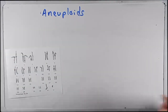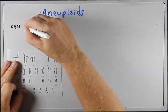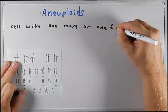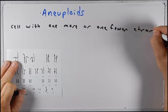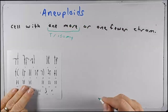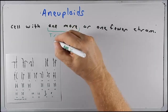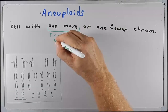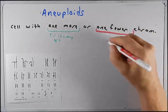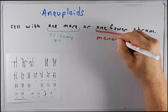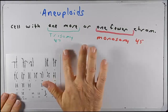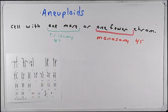Now let's move our attention to aneuploids. An aneuploid is a cell with one more or one fewer chromosome. When it's a cell with one more chromosome we call that a trisomy — in humans, someone who is a trisomy has a total of 47 chromosomes. When there's someone with one fewer chromosome, we call that a monosomy — in humans that would be someone with 45 chromosomes. There are some variations to this but these are the two categories we talk about for this class.